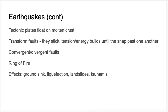Earthquakes happen because the Earth's crust is divided into tectonic plates that float on a molten crust, gliding along on convection currents — either moving away from each other, towards each other, or alongside each other. At transform faults, plates try to slide past each other but they're very rough, so there's a lot of friction. Stress and tension — essentially potential energy — build up until the energy snaps the plates past each other in a very sudden movement. That's the earthquake.